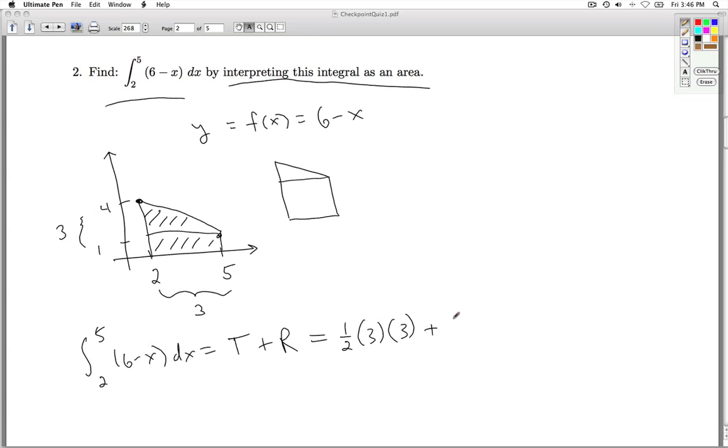What about the rectangle? The rectangle is just base times height. The base is 3. And what's the height of the rectangle? That's just 1. So I get 9 halves plus 3, which is 9 halves and 6 halves, which is 15 halves.